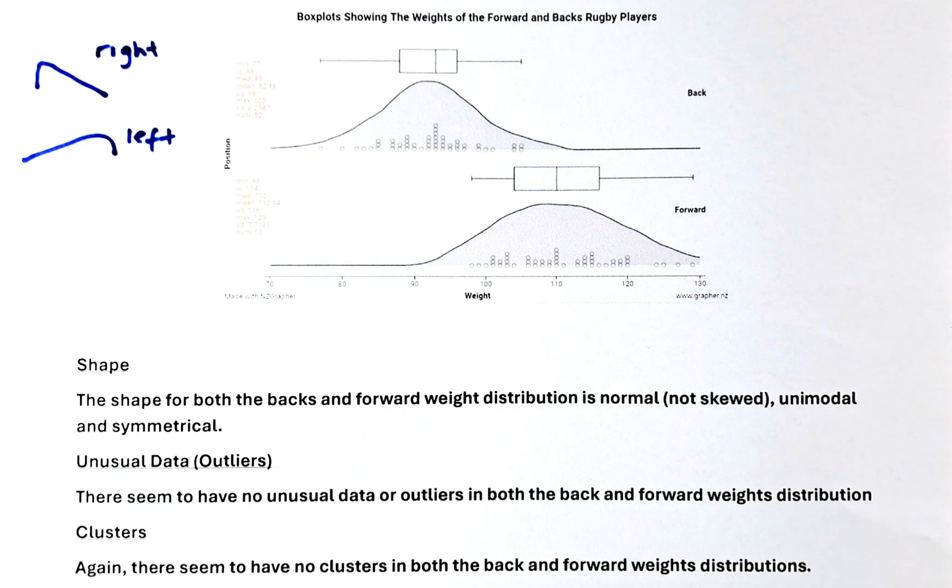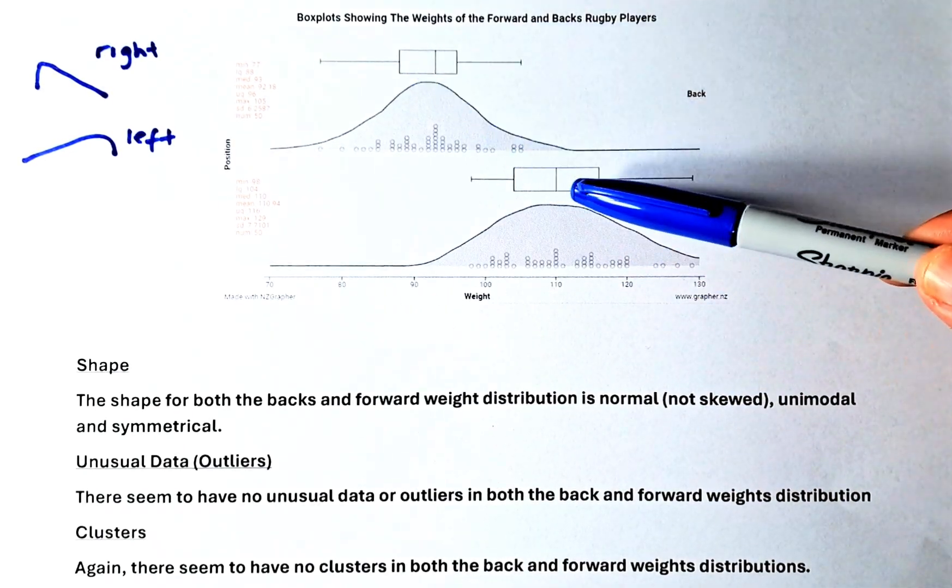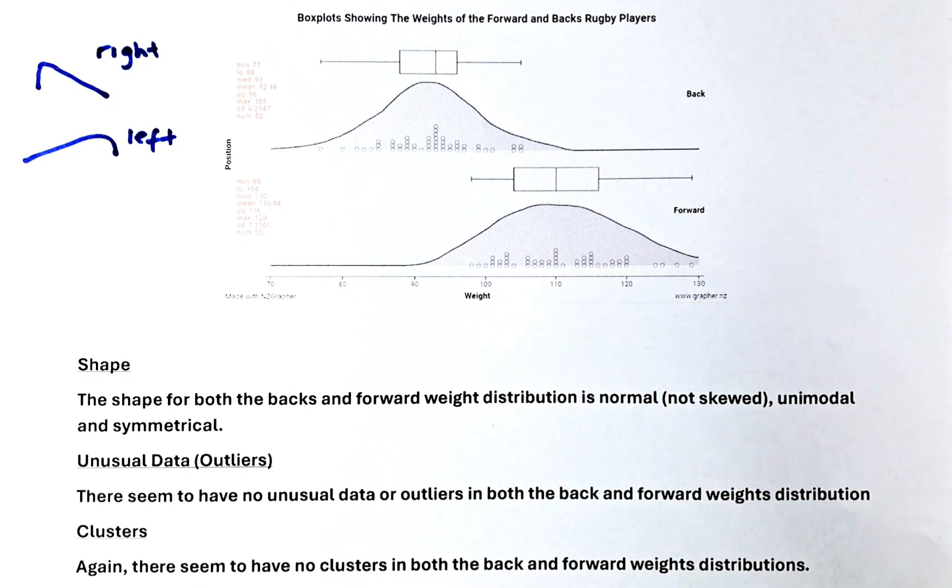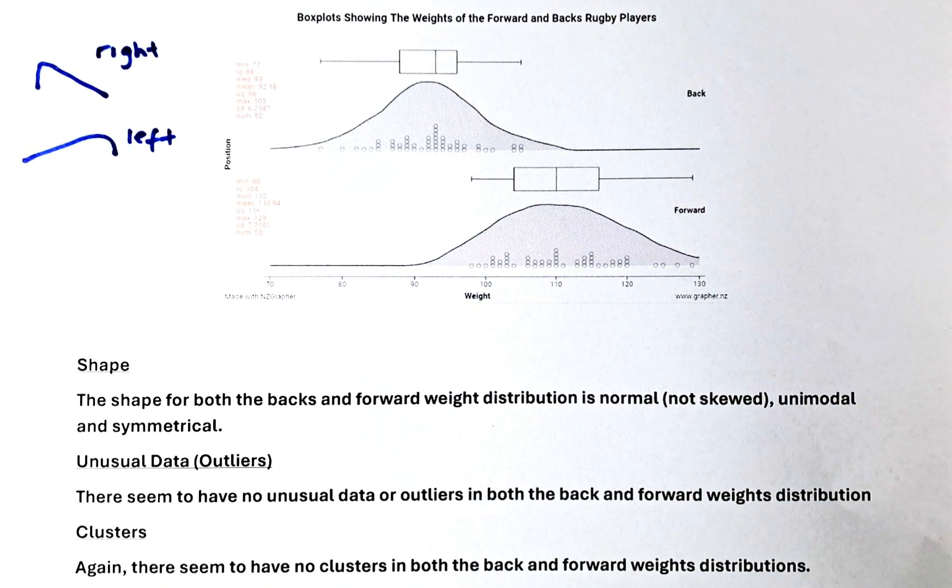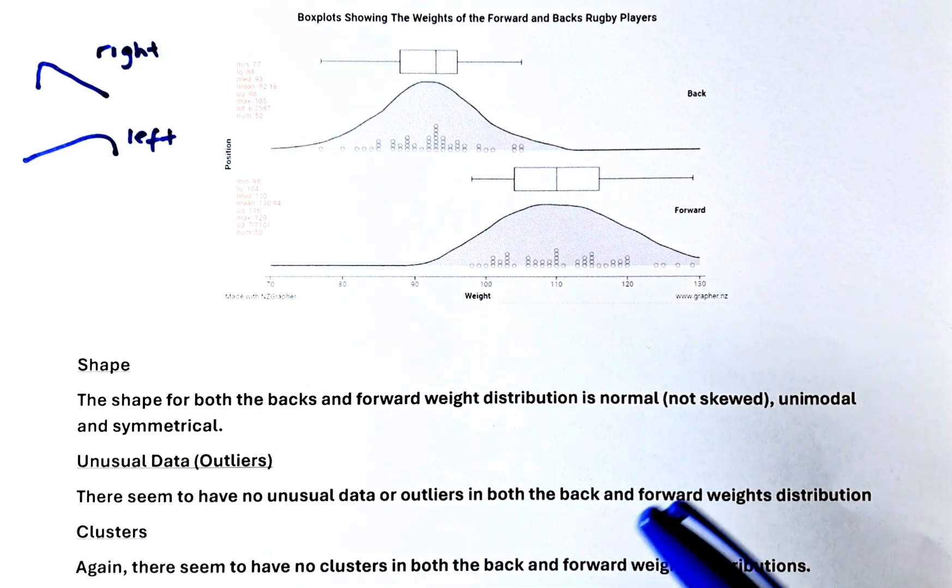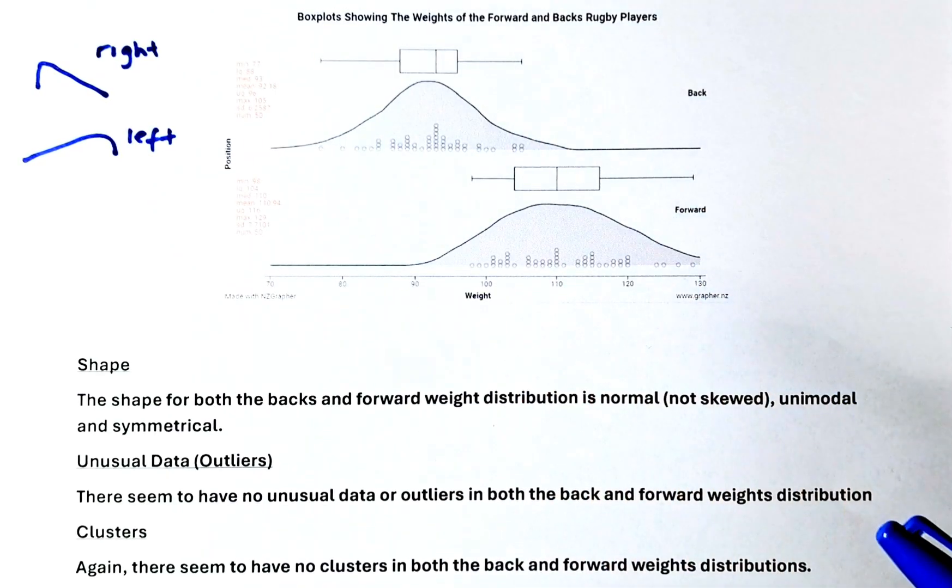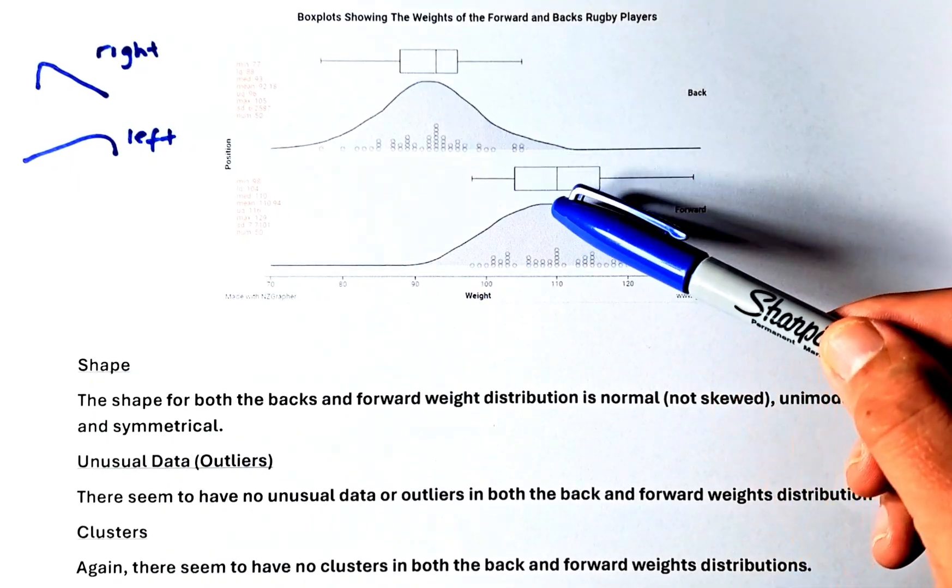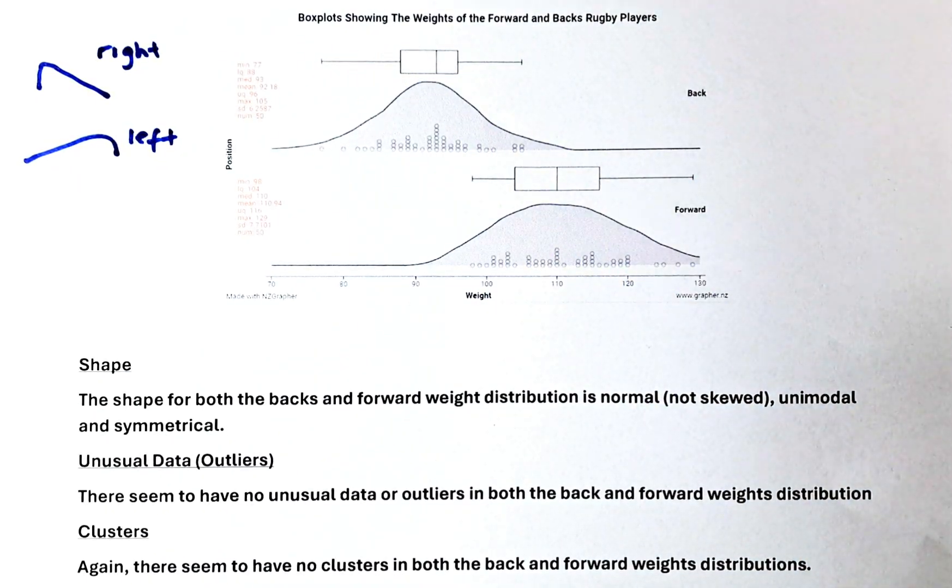Last but not least we need to know how many highest points, how many peaks. In this case we have one peak for the back and one peak for the forward. So in our shape we are going to talk about the shape for both the back and forward distribution is normal. This is bell-shaped curve. It is not skewed. It is unimodal because there's only one peak and both distributions are symmetrical.